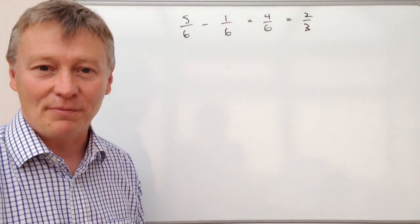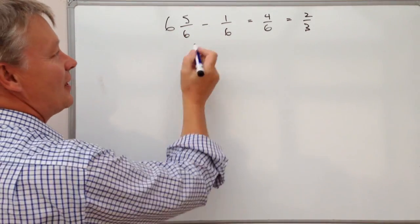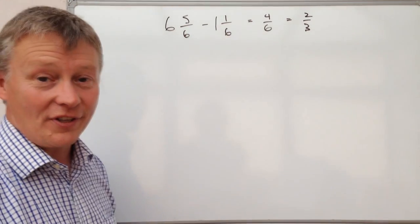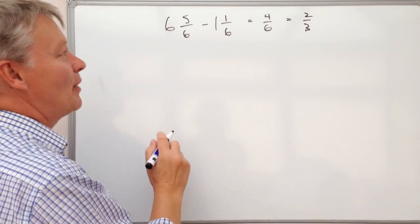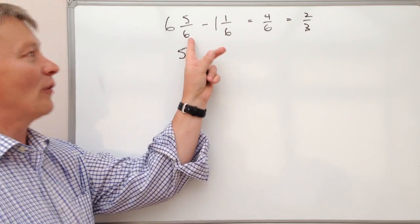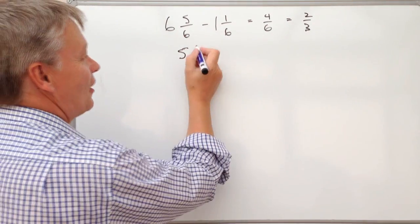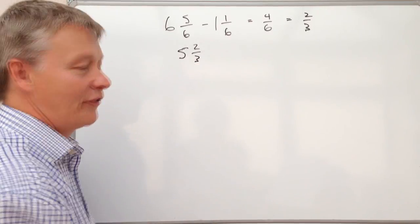So in terms of perhaps making it a little bit more complicated, let's say that's 6 and 5/6, and that's 1 and 1/6. All we do is we take away the big numbers first, so 6 take away 1 is 5. We've already taken away 5/6 take away 1/6, so the answer is going to be 5 and 2/3.